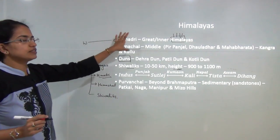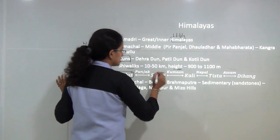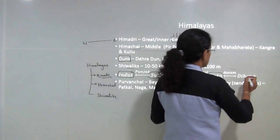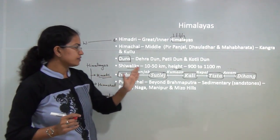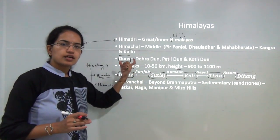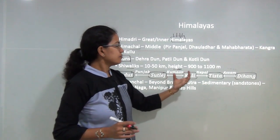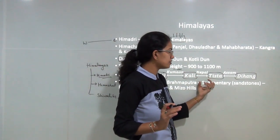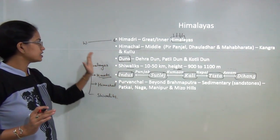The west-to-east division works around the basic rivers that flow into the region. From west to east: Indus, then Sutlej river, Kali river, Tista river, and finally Dihang — which we call Brahmaputra in Assam. The region between Indus and Sutlej is known as Punjab Himalayas; between Sutlej and Kali as Kumaon Himalayas; between Kali and Tista as Nepal Himalayas; and between Tista and Dihang as Assam Himalayas.